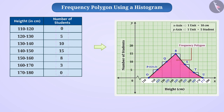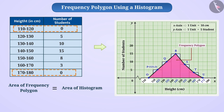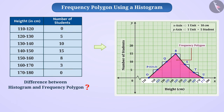This shows that the area of the frequency polygon is equal to the area of the histogram. In this way, the class intervals of zero frequency help us to equalize the area of frequency polygon to the area of the histogram. Now you know about histogram and frequency polygons — can you tell the difference between the two?